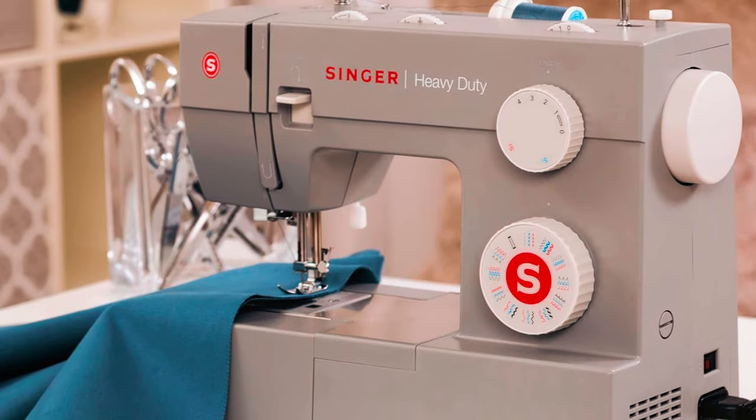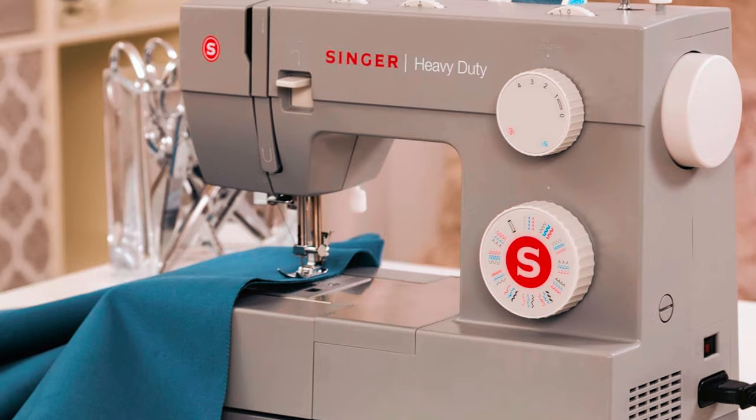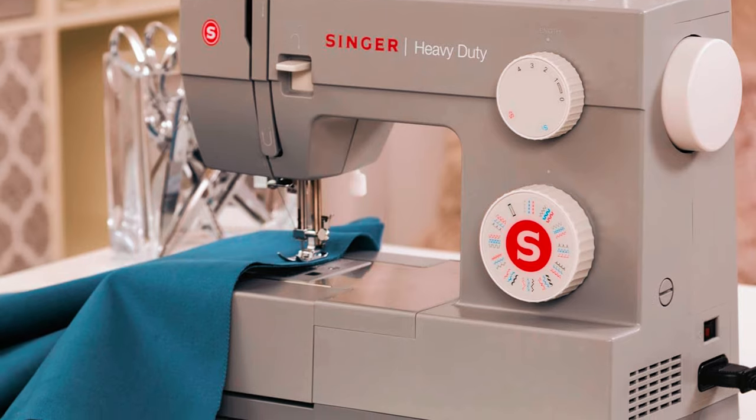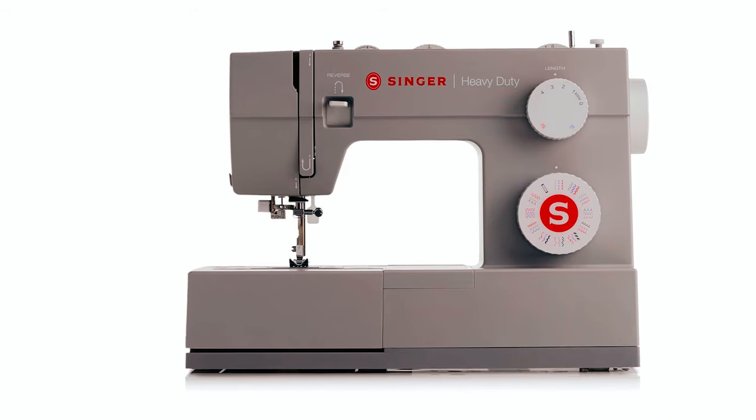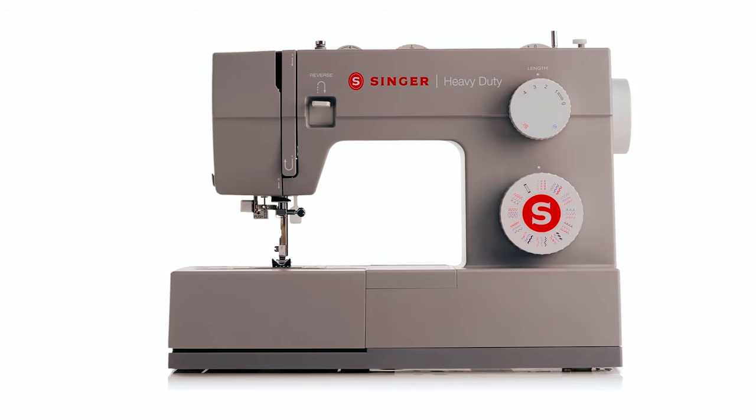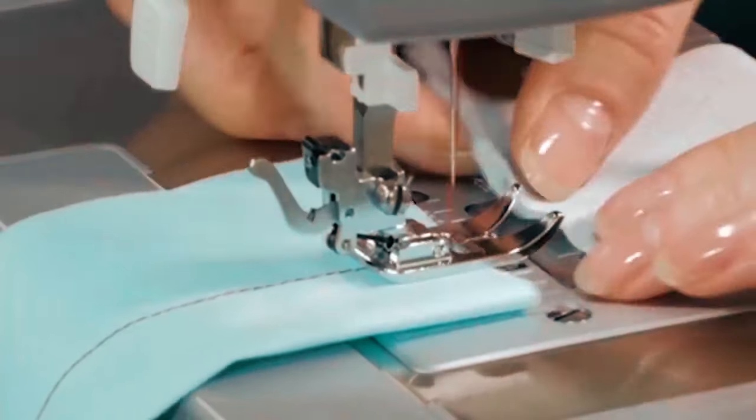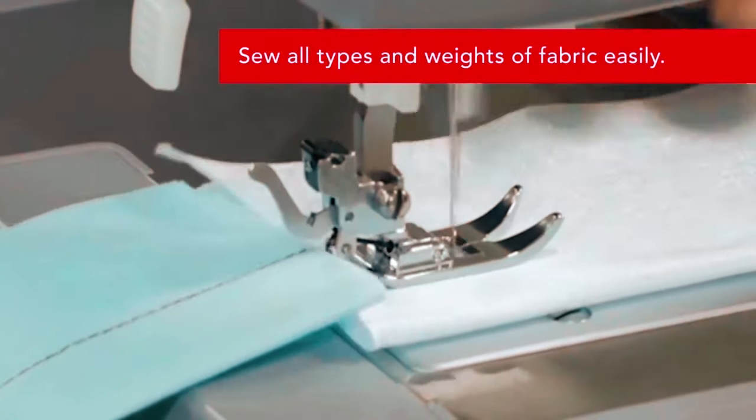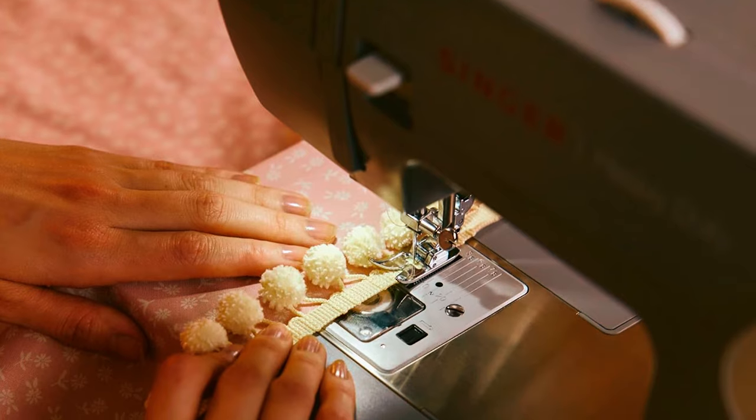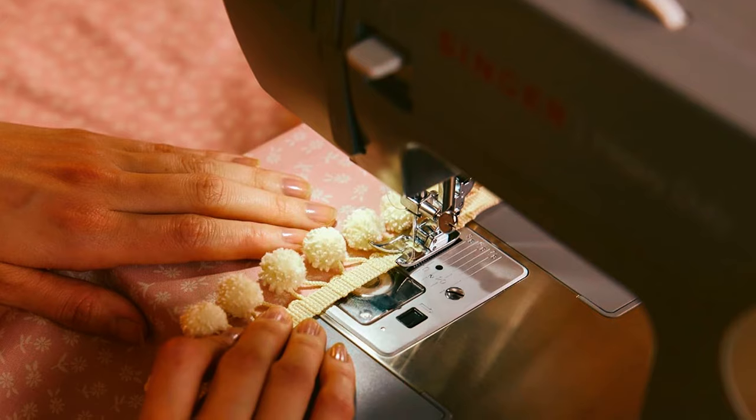The Singer 4452 comes with a number of accessories including a walking foot for layers of fabric, a nonstick foot for leather and vinyl, a 5-pack of size 16 needles, and a clearance plate for thick seams. With a stainless steel bed plate for smooth fabric flow and a heavy-duty interior metal frame for skip-free sewing, this machine truly is a workhorse.